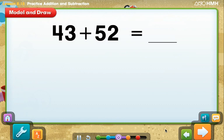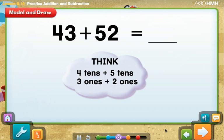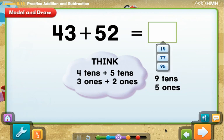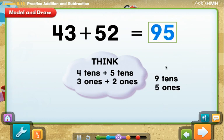Now, let's add 43 plus 52. Since both numbers have tens and ones, you can add tens to tens and ones to ones. Think, 4 tens plus 5 tens and 3 ones plus 2 ones. The totals are 9 tens and 5 ones. So what is 43 plus 52? That's right! 43 plus 52 equals 95.